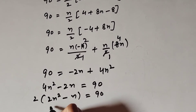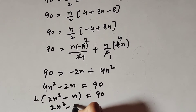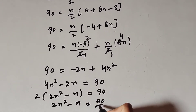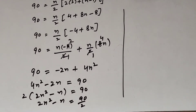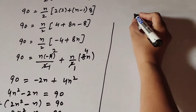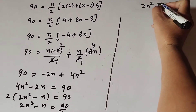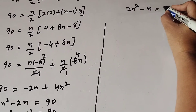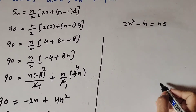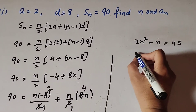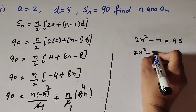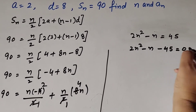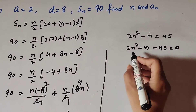So 2n squared minus n equals 90 divided by 2, which equals 45. Therefore 2n squared minus n minus 45 equals 0. Now we solve this quadratic equation.